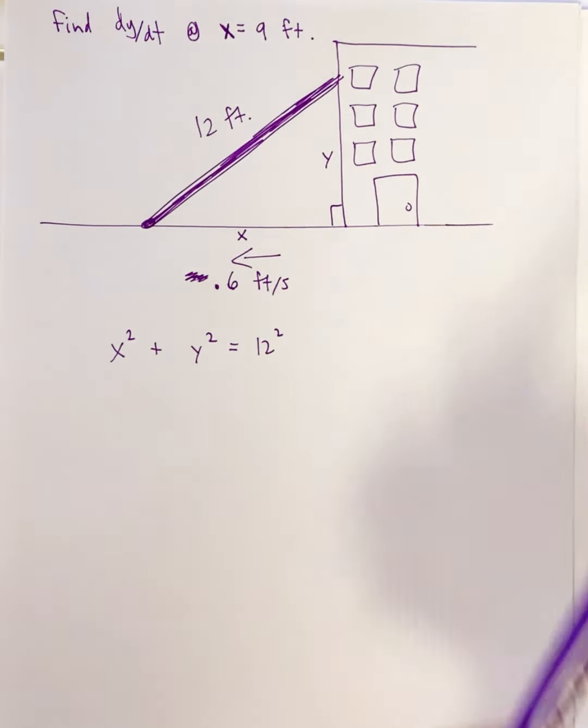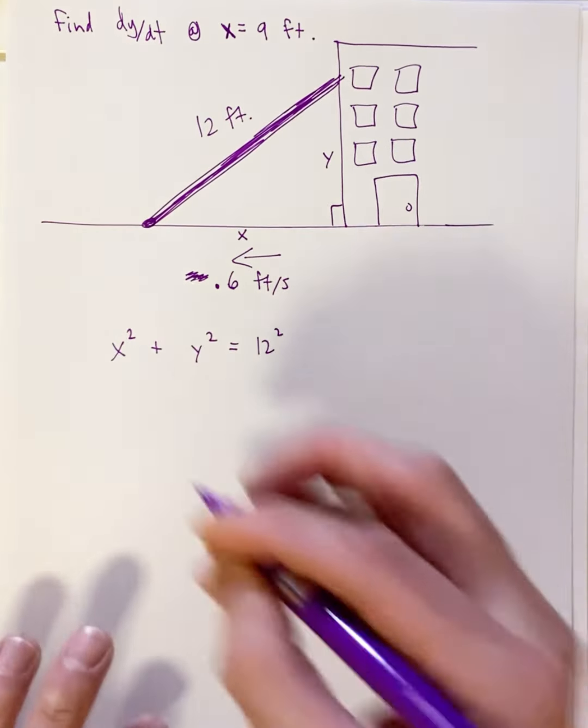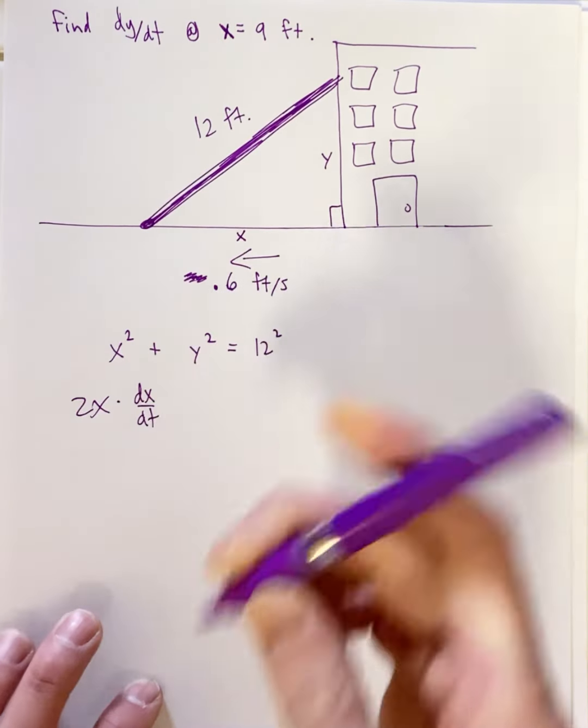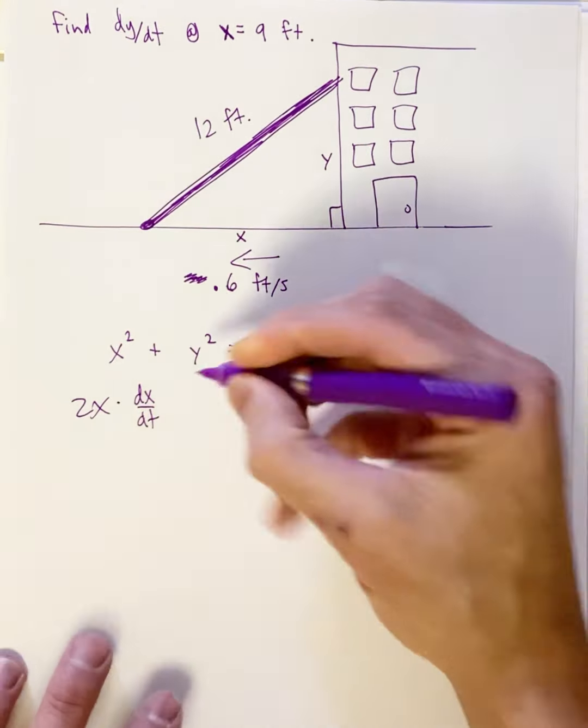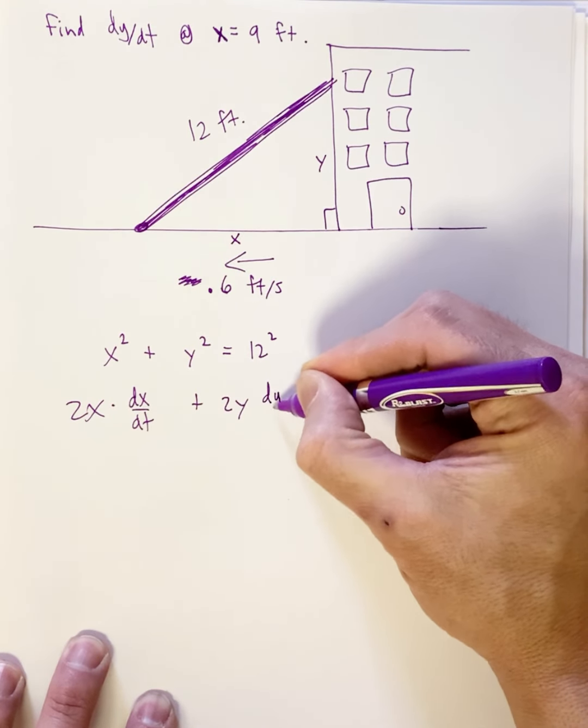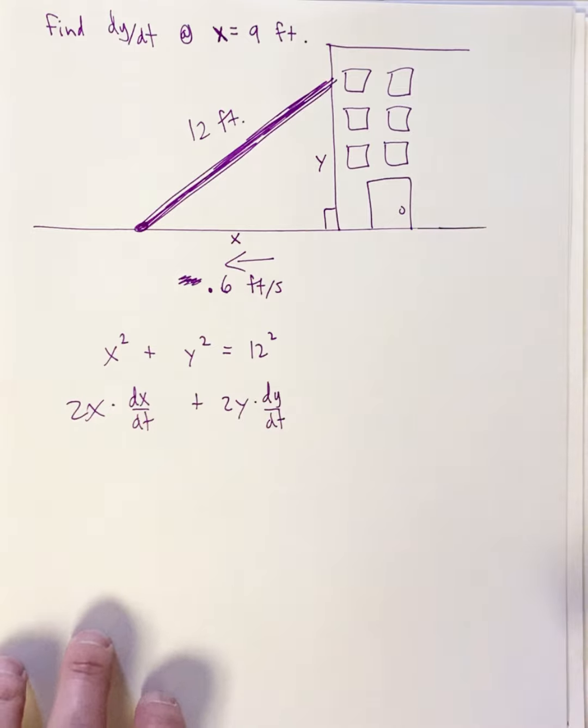Now why don't we take the derivative. The derivative of this is going to be not just 2x but it's going to be 2x times dx/dt. How about this one? Plus the derivative of that would be 2y times dy/dt - implicit differentiation.